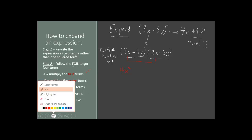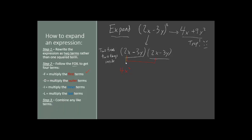The second step is to multiply the outer terms together — this 2x with this negative 3y. Let's do the numbers first, then the letters. 2 times negative 3 gives us negative 6, and x times y gives us xy. That takes care of the second step.